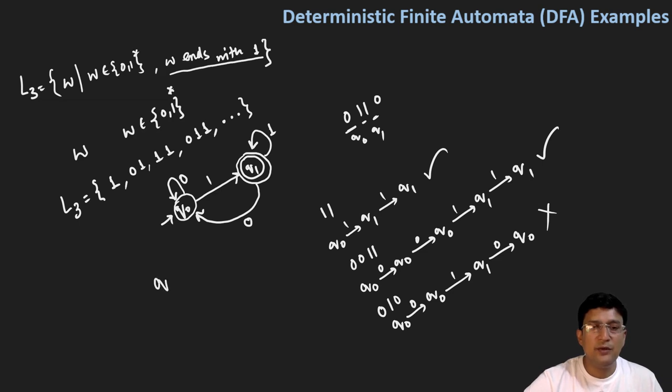Have we shown all the transitions or not? To verify this, let's also make a transition table. So the transition table: q0 is the start state and q1 is the final state, with inputs 0 and 1.